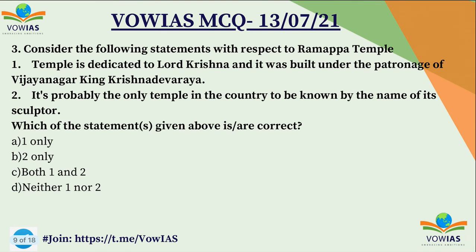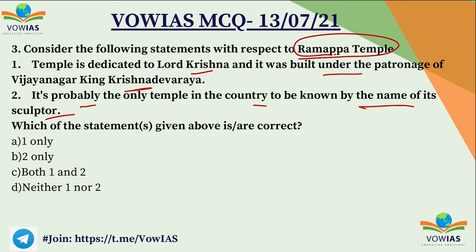The third question: 'Consider the following statements with respect to Ramapa Temple. First, it is dedicated to Lord Krishna and was built under the patronage of Vijayanagar king Krishnadevaraya. Second, it is probably the only temple in the country to be known by the name of a sculptor.' The Ramapa Temple was not built under Krishnadevaraya and is not dedicated to Lord Krishna. It is located in Warangal in Telangana, built under the Kakatiya dynasty, and is a temple of Lord Shiva. So the first statement is wrong, but the second is right — it is the only temple named after its sculptor. B, two only, is the correct answer.